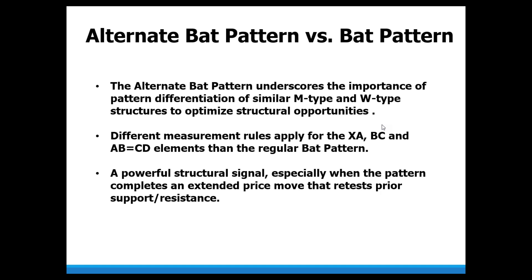But the alternate BAT — how is that different from the regular version? There are profound differences, and it underscores why we need to differentiate these M and W structures. The different measurements for the XA, the BC, and the ABCD elements are all different than the regular version. It's a powerful structure, and the alternate BAT pattern is effective in particular markets where the initial points tend to be retested.